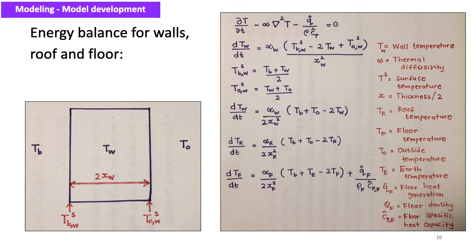Because of the simplifications used in estimating the surface temperatures of the building envelope, complex boundary condition equations were not used in this model. However, if you want to estimate the surface temperatures more accurately, you can write an equation relating the conduction and convection heat transfer at the surface of the property.